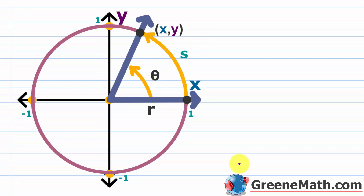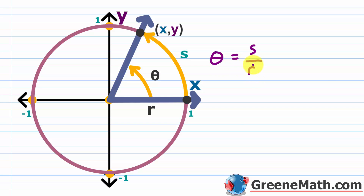Now let's talk about circular functions. All we're doing is swapping theta out for s. When working with a unit circle the radius is 1, and the formula for an angle in radians is theta equals s over r, where s is the arc length and r is the radius. Since r equals 1, theta equals s. So trigonometric functions of angle theta measured in radians can be rewritten as functions of arc length s, a real number. When shown this way, the functions are known as circular functions.